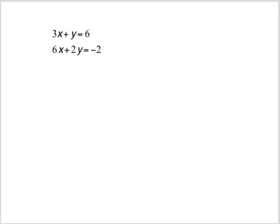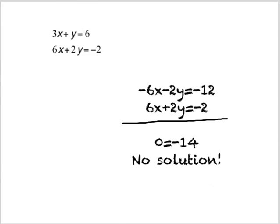If I solve this system, I might choose to multiply the first equation by -2 and get -6x - 2y = -12. When I combine them, the variables completely disappear, but the equation I'm left with is not true. It's false because 0 ≠ -14. This tells me that these two lines are parallel. They will never intersect, and therefore there is no solution.